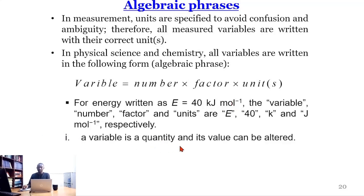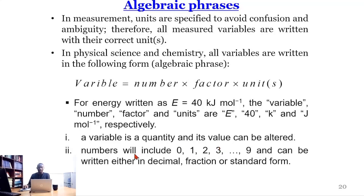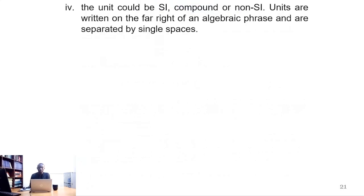Now a variable is a quantity and its value can be altered. Numbers include 0, 1, 2, 3, up to 9 and can be written in either decimal, fractional, or standard form. A factor is either a decimal fraction or multiple as we saw in Table 3. The unit could be SI, compound, or non-SI unit.